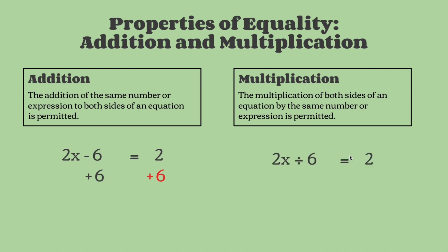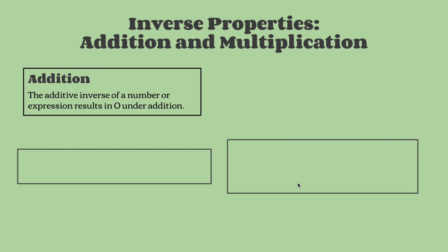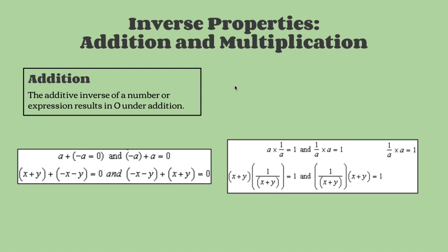The multiplication property of equality states the same thing, but with multiplication. So here we have 2x divided by 6 equals 2, and we would multiply by 6 on the left side of the equation to cancel out the division by 6 — so we have to do it on the other side as well.